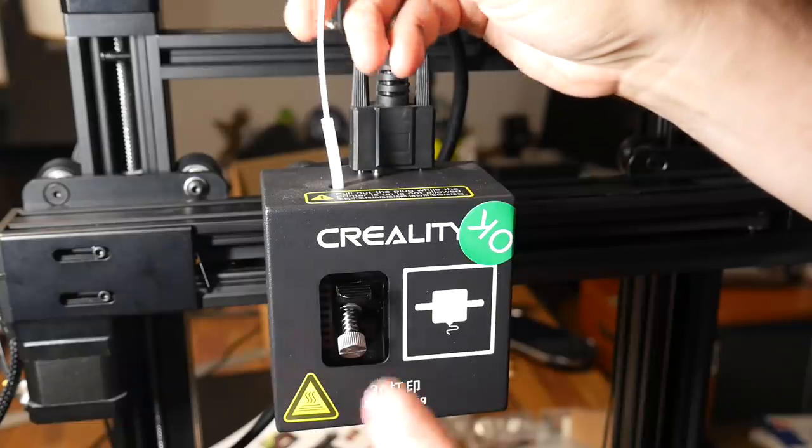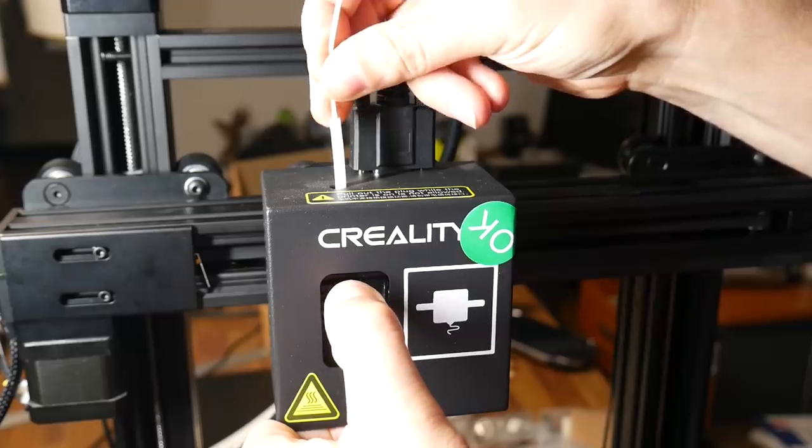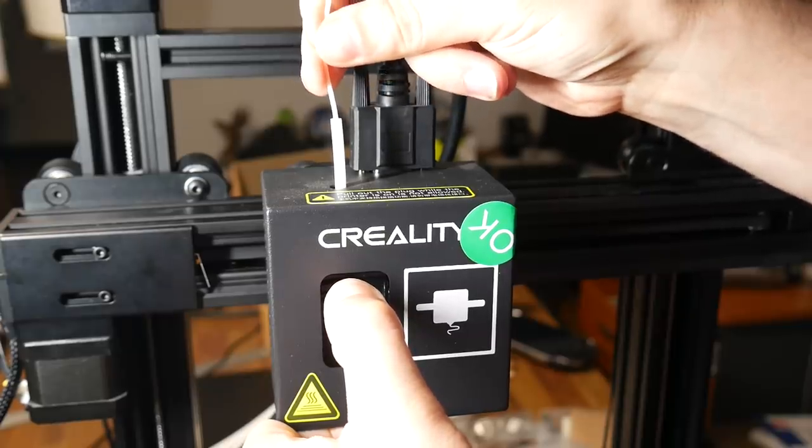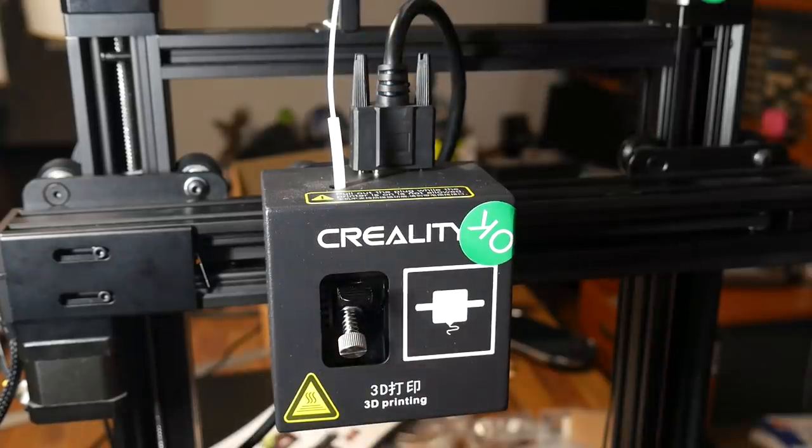I decided to start things off by printing some of the pre-sliced G-code on the SD card. The direct drive extruder has this big thumb lever, and it's really easy to heat up the nozzle, pull on the lever, and then manually push the filament through, ready to print.